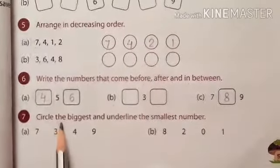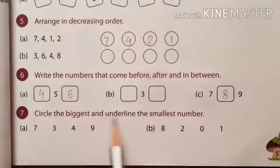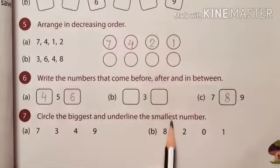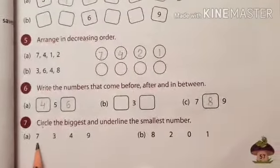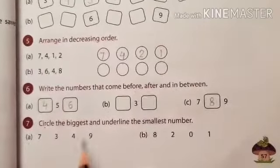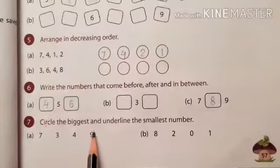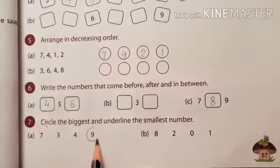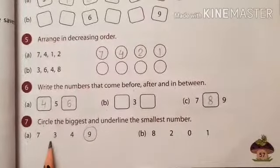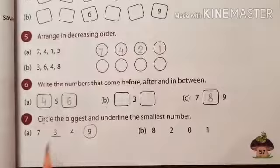Number 7. Circle the biggest and underline the smallest number. A. 7, 3, 4, 9. The biggest number is 9. So circle it. And smallest number 3. So underline it.